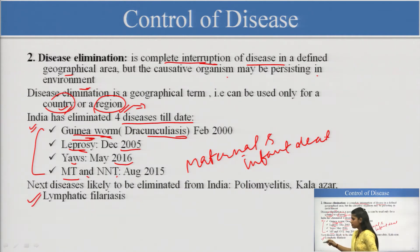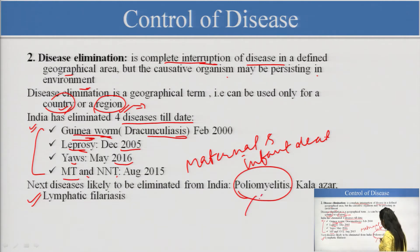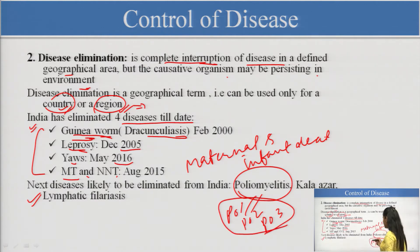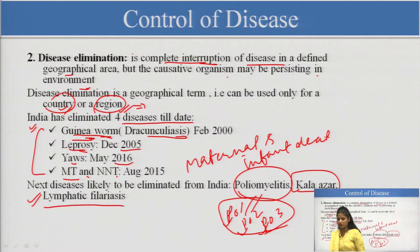India is planning to remove or eliminate poliomyelitis next. In poliomyelitis we have different strains: poliovirus 1, poliovirus 2, and poliovirus 3. All three strains have not been eliminated till now, so we have a plan for eliminating all of these strains. Then kala-azar and lymphatic filariasis are also targets. These three diseases are in India's next target.